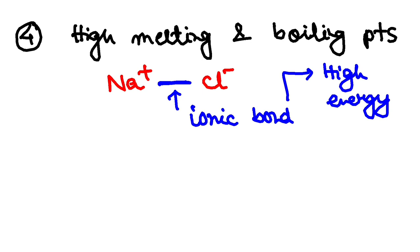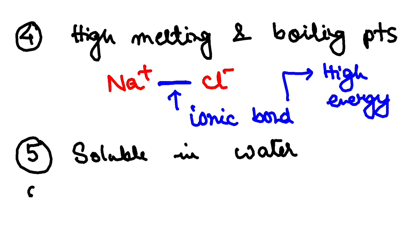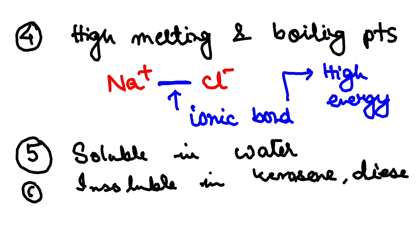The fifth point is solubility. Regarding solubility, ionic compounds are soluble in water. And at the same time, they are insoluble in solvents like kerosene and diesel. So, six properties we have found. Seventh one.